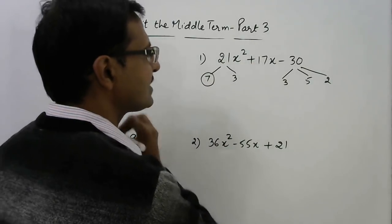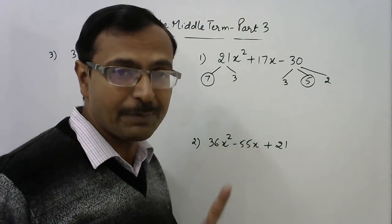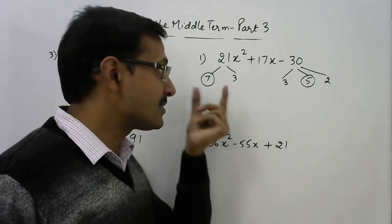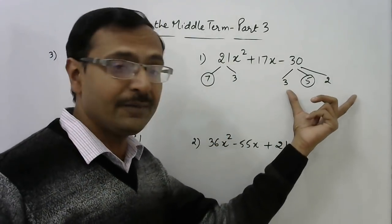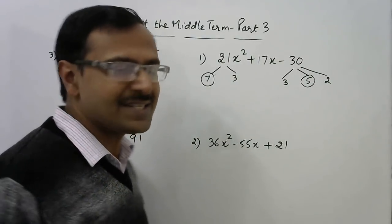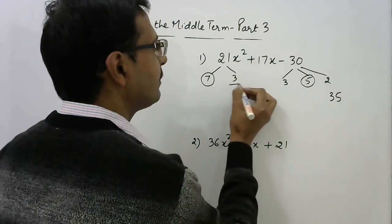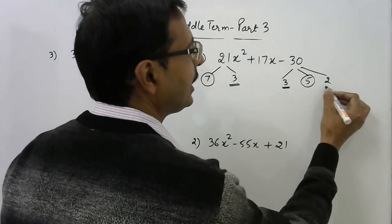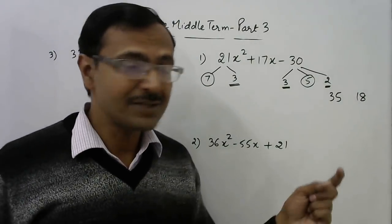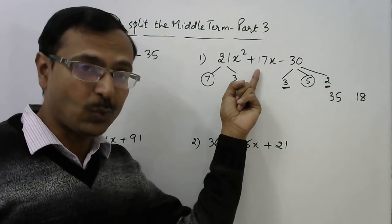So I need to have a big number and a small number so that I can have the solution. See the largest number here is 7 and the largest number here is 5. Try to combine the largest factors here and here. The product of those two numbers might give you the solution. Let us check here. So 7 into 5 is 35 and what about the other numbers 3 into 3, 9, 9 to the 18.